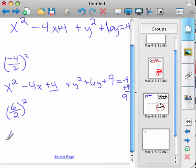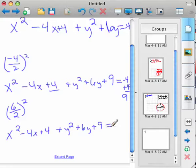And so, now we've got this equation. x squared minus 4x plus 4 plus y squared plus 6y plus 9 equals negative 4 plus 4 plus 9 would equal 9.